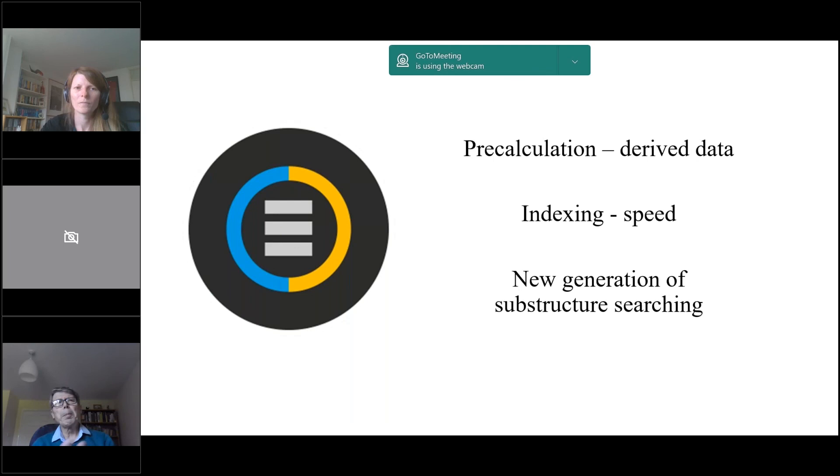So that's basically what I've said. Pre-calculation derived data, indexing to give you really fast retrieval speeds, and a new generation of substructure searching. I mentioned 2D substructure searching as really a big step forward, and that wasn't driven because users were asking for it at the time in the 70s. There weren't many users then. It was about opening the CSD up to a new set of users, and I think derived databases will do exactly that. That's all.